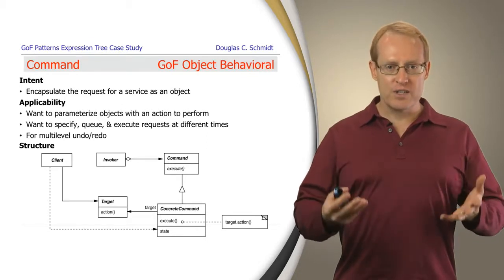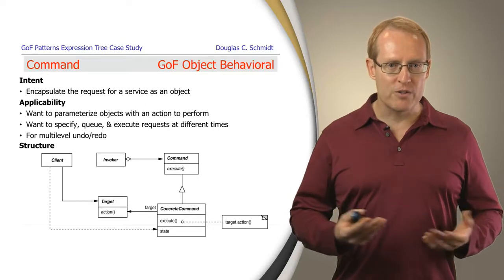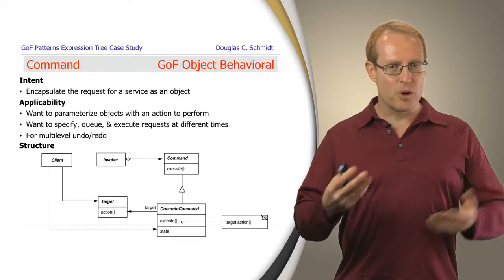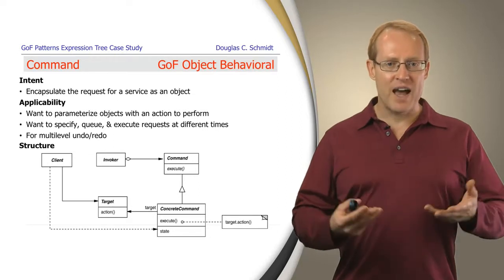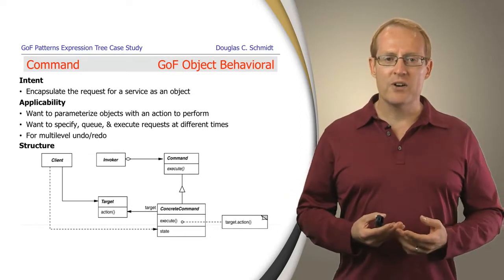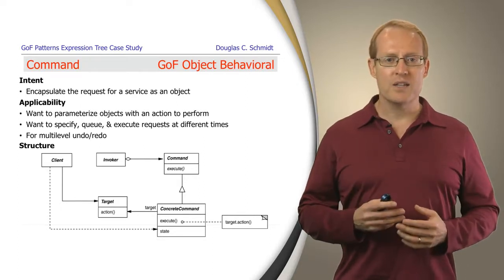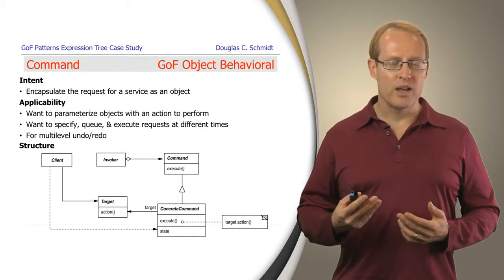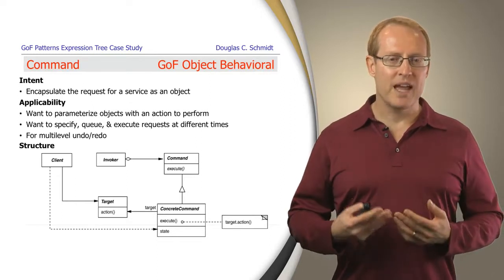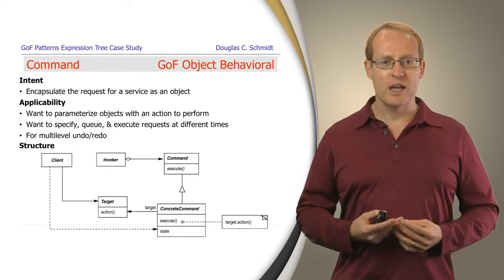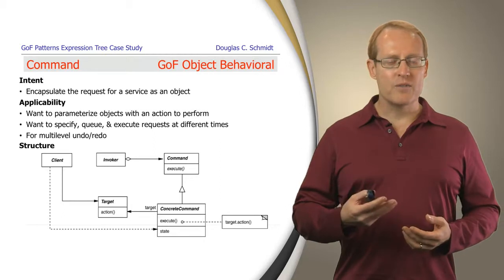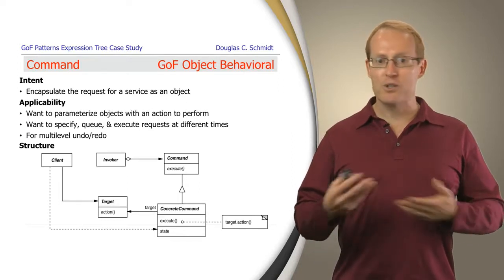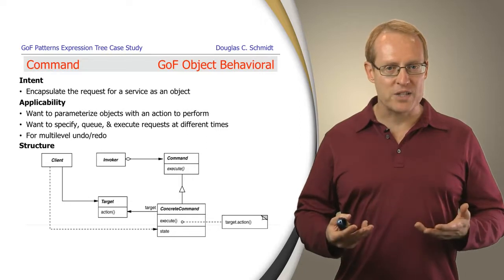For example, if you're building a menu-driven user interface, you might implement the various menu selections as commands — open, close, save, save as, and so on. You might also use this pattern if there's a need to specify, queue, and then execute commands at some later point in time — which is where this pattern has a lot in common with the command processor pattern from POSA1, which talks more about queuing commands and dispatching them potentially in a separate thread of control. You could also use this pattern for multi-level undo and redo, running sequences of undo and redo operations backwards and forwards on a history list.